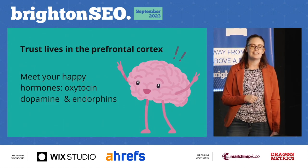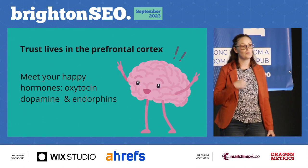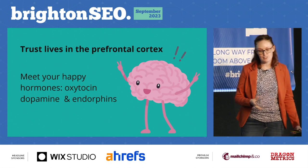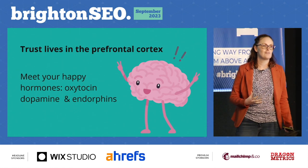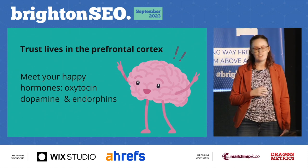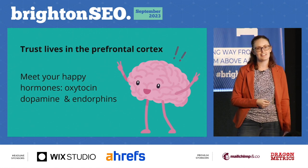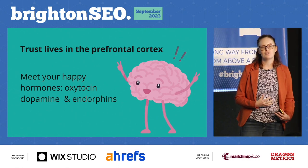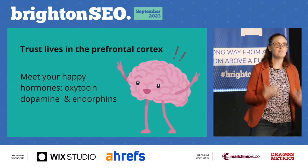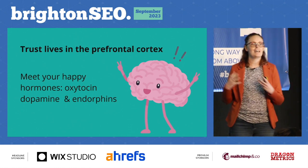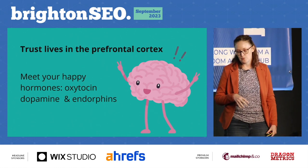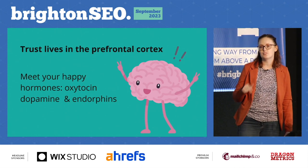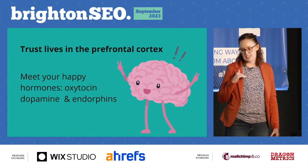Biologically speaking, trust lives in an area of the brain called the prefrontal cortex, right here. When you feel trust, biologically speaking, hormones are released: oxytocin, dopamine, and endorphins. And what that really means is that when these hormones are released, that makes you braver and bolder — it means you're going to make another decision. That's important even when someone's clicking on a link on your website; this is still happening every single time someone makes a positive decision.